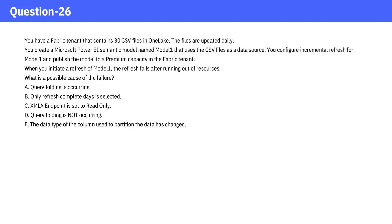You have a Fabric tenant that contains 30 CSV files in one lake. The files are updated daily. You create a Microsoft Power BI semantic model named Model 1 that uses the CSV files as a data source. You configure incremental refresh for Model 1 and publish the model to a premium capacity in the Fabric tenant.